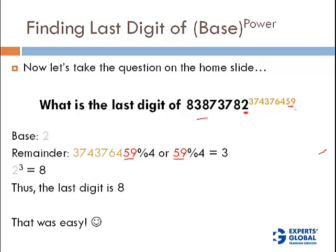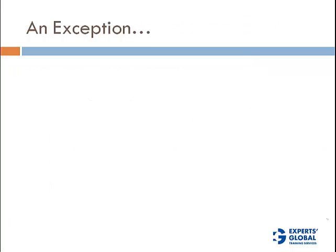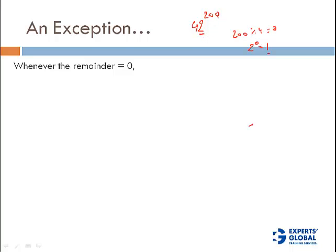However, there is an exception. Whenever the remainder is 0, things change. For example, 42 raised to the power 200: dividing 200 by 4 gives remainder 0. If you do 2 raised to the power 0 you get 1, but the last digit cannot be 1 because an even number raised to any power gives an even last digit. So the rule is: whenever you get a remainder of 0, take the remainder as 4 instead.